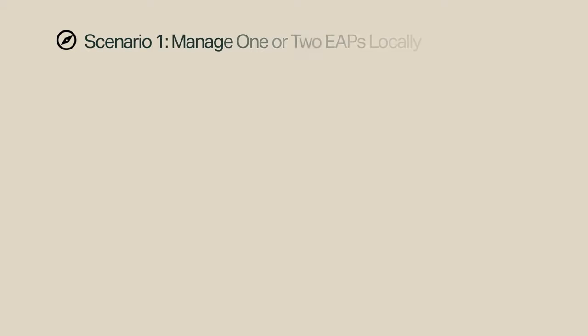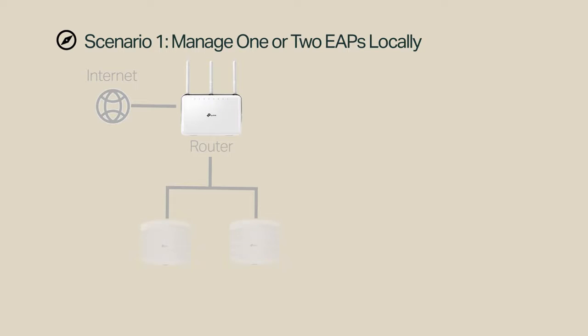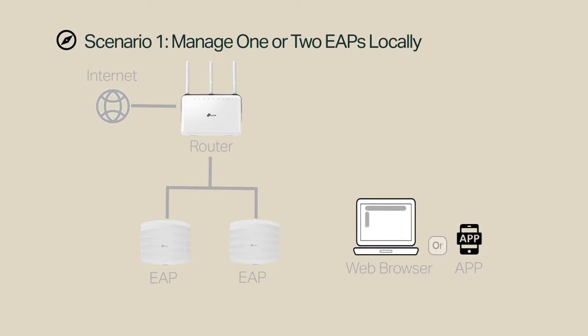To manage one or two EAPs locally, connect your router to the Internet and EAPs to the router. You don't need any controller in this method. You can use either a web browser or the Omada app to manage the EAPs separately in standalone mode.